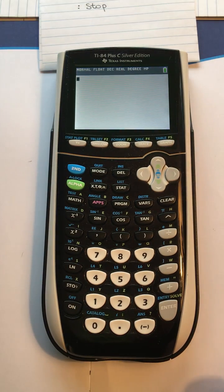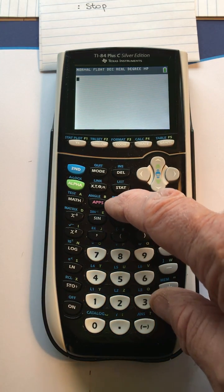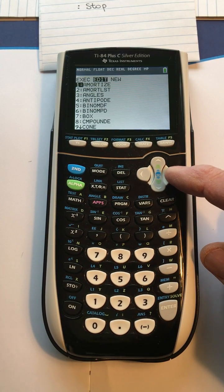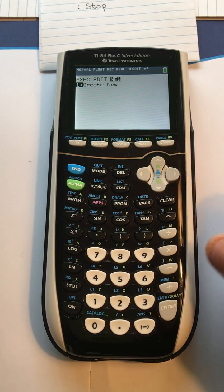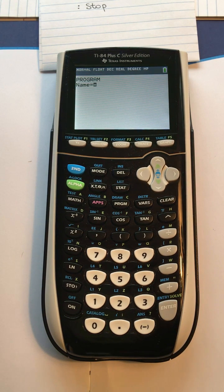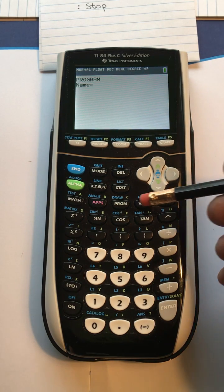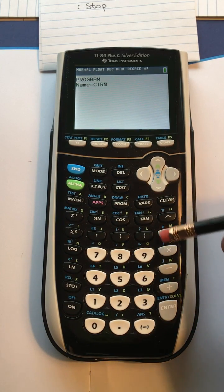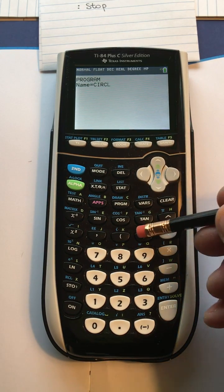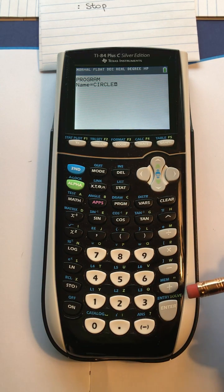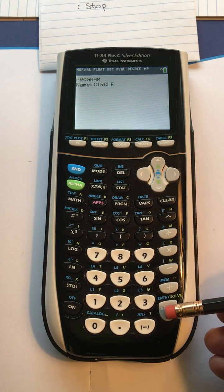You turn on the calculator, press program right here, and then we go over to new and create new, press enter. Once we press enter it's in alpha mode and we want to be able to type in the name of the program. We're going to call it CIRCLE. C-I-R-C-L-E. Notice that the alpha letters are above to the right of each of the keys. Then you press enter.